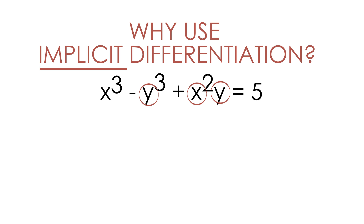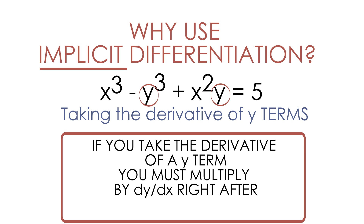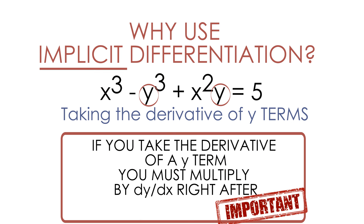Don't worry — using implicit differentiation is not much different than what we've been doing already. The main difference is that we'll be taking the derivative of y terms. The one thing you have to remember is: if you take the derivative of a y term, you must multiply dy/dx right after that term. You'll see what I mean once we get started.